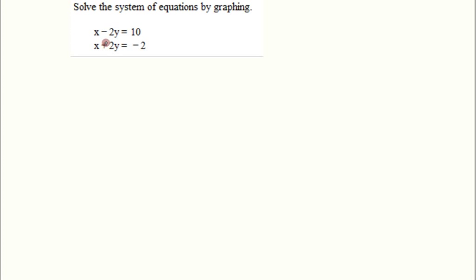Okay, it says to solve the system of equations by graphing. So we want to graph x minus 2y equals 10 and x plus 2y equals negative 2 on the same rectangular coordinate system. And if they intersect, then the point at which they intersect is the solution to the system of equations.